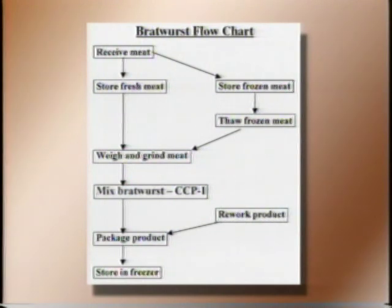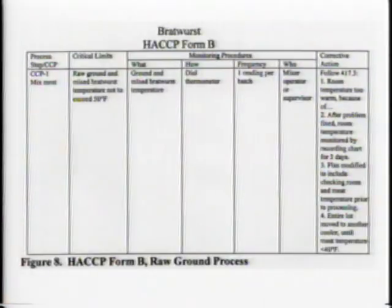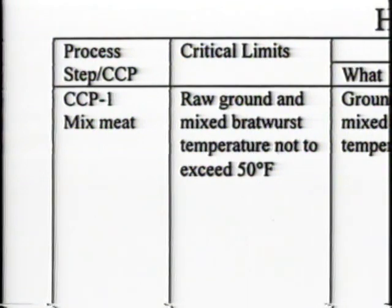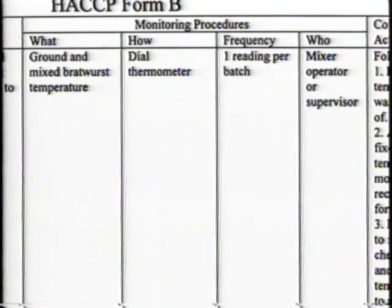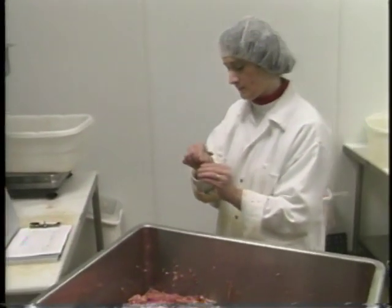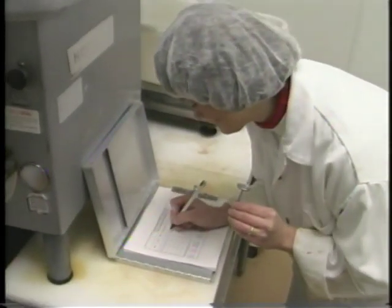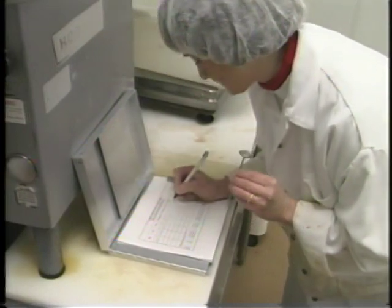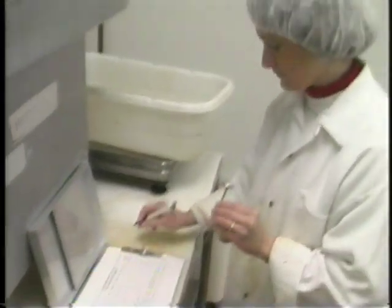Through hazard analysis, this very small establishment, Carly's Bratwurst, has identified the grinding step as a critical control point for a biological hazard in their raw ground product HACCP plan. Their critical limit for this CCP, seen in the second column of Form B, is 50 degrees Fahrenheit maximum internal ground meat temperature. Monitoring procedures for CCP-1 involve checking ground product temperature once per batch at the time of mixing. The designated employee, in this case the person mixing the bratwurst, monitors this CCP using a dial thermometer and records the temperature on the monitoring form in Figure 9.